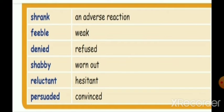First we are going to see about the glossary of this lesson. Shrank — an adverse reaction. Fever, Weak — Belaveenamana. Denied, Refused — Marukkapattu. Shabby, Worn Out — Thayindu Pone, Kalaihtu Pone. Reluctant, Hesitant — Thayakamana, Thayakam. Persuaded, Convinced — Varppurutthirudhu.